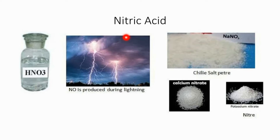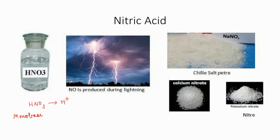Nitric acid is a highly corrosive acid. The formula of nitric acid is HNO3. In a dilute solution, one molecule of nitric acid can produce one H+ ion. Because of this, nitric acid is also known as a monobasic acid. If an acid produces two H+ ions we call it a dibasic acid, three would be tribasic. But nitric acid can produce only one H+ ion per molecule — that is the reason we call it a monobasic acid.